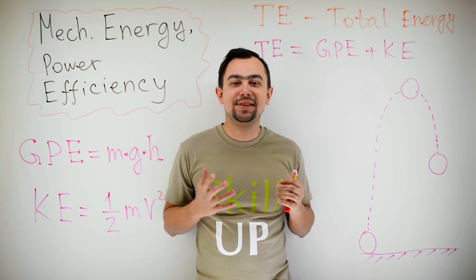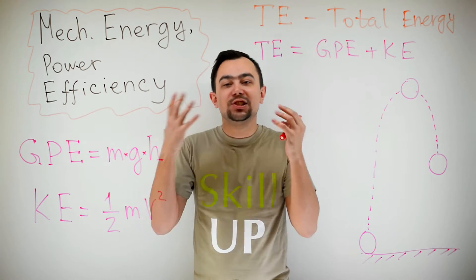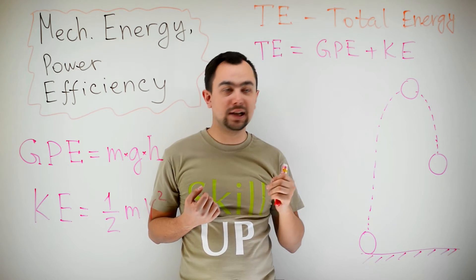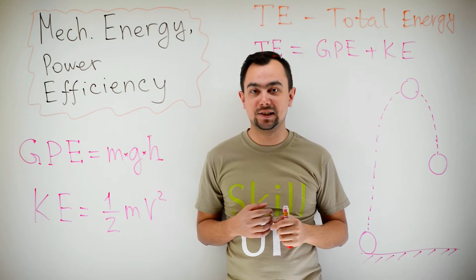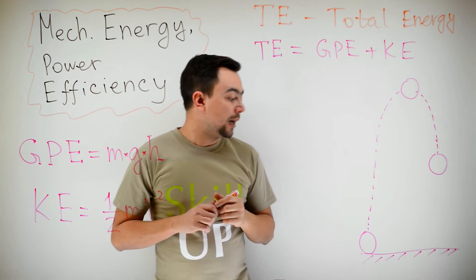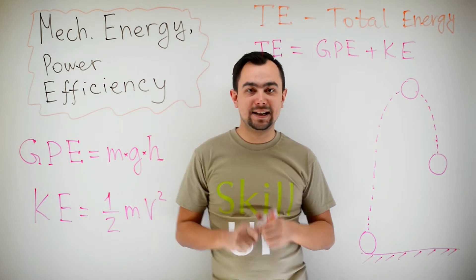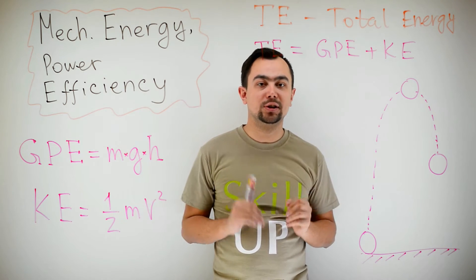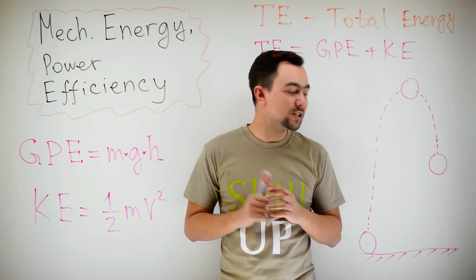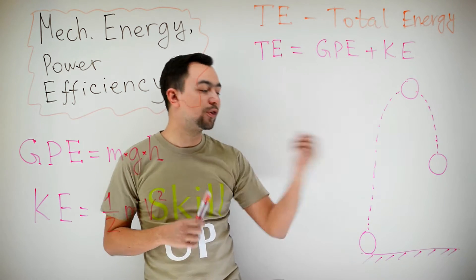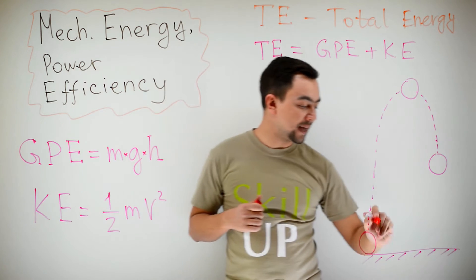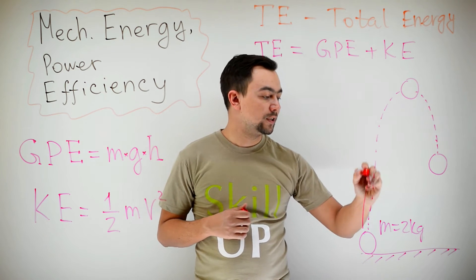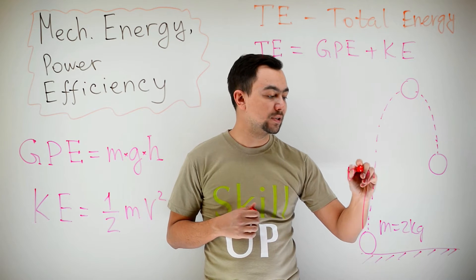Another thing we'll be discussing today is total energy. Well, total energy is simply gravitational potential energy plus kinetic energy. The law of conservation of mechanical energy states that total energy remains constant. What does it mean?